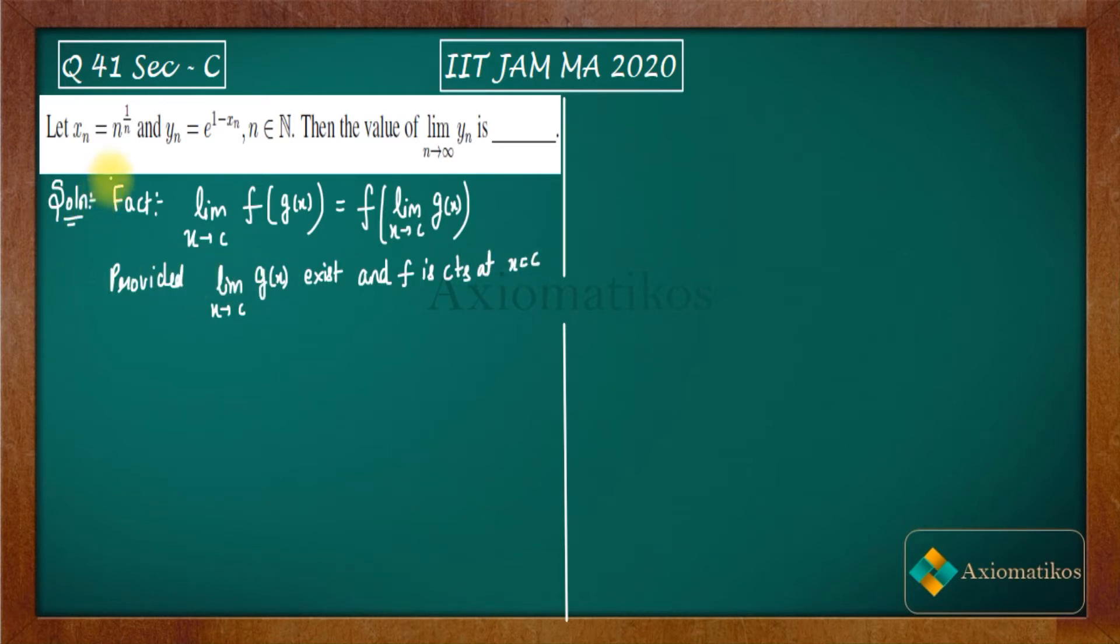So this fact will work when this limit X goes to C exists as well as F is continuous at X is equal to C. So this will work. Now this will simply solve our problem. So what we have, we have this YN is equal to E to the power 1 minus XN.